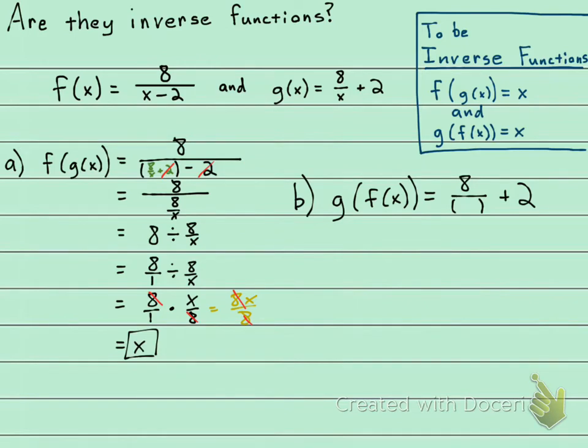So where your x was, we're going to be putting in the f of x, which goes right here where the x was. Let's put it in. 8 over x minus 2. I'll do it in blue. 8 over x minus 2.